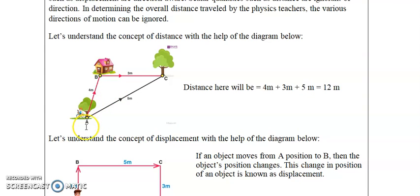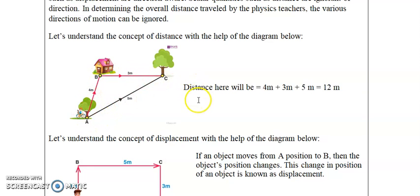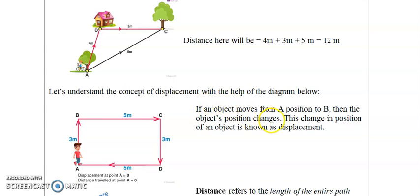Let's look at another example. Starting from point A, a person bikes four meters to one point, then another three meters to another point, then returns five meters back to the starting point. The distance traveled by the person is equal to twelve meters. To find distance, simply add the magnitudes of all path segments traveled.